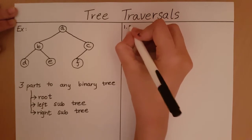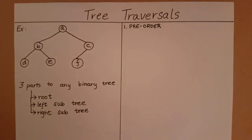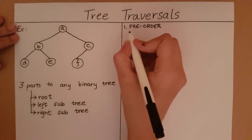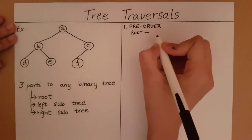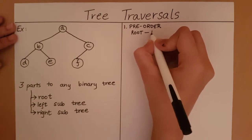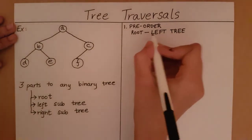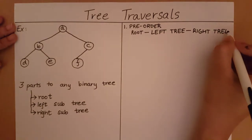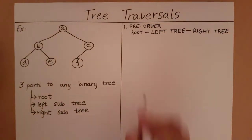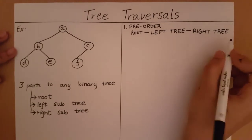Method 1 is going to be preorder traversal. What preorder states is that when we are traversing a binary tree, the order we must follow is: first, visit the root; then, traverse the left subtree; and after we traverse the left subtree of the root, traverse the right subtree of the root. So first we will visit the root, then we will visit all elements of its left subtree, and after doing that, we will visit all elements of its right subtree.